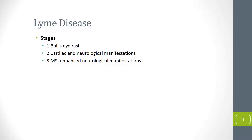The stages of Lyme disease begin with the bullseye rash, which is a very characteristic sign — a circle with a lighter center. After that, the patient may start developing cardiac and neurological manifestations in the second stage, including complaints of chest pain, rib soreness, and shortness of breath.